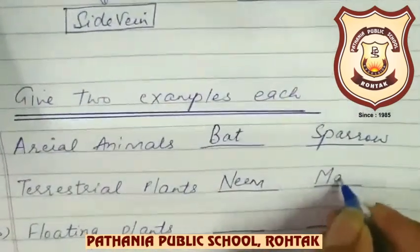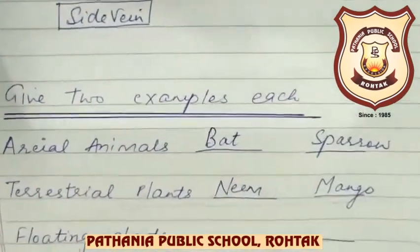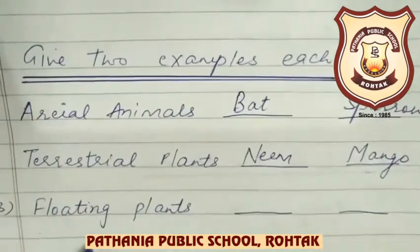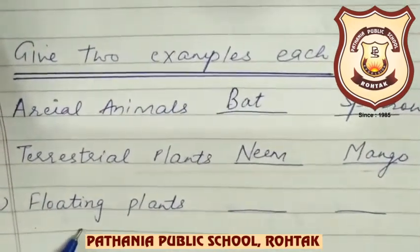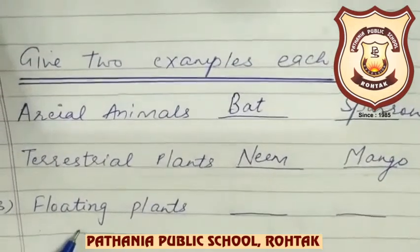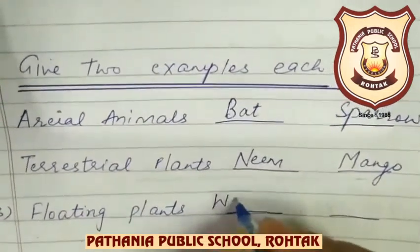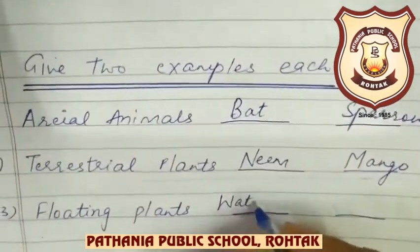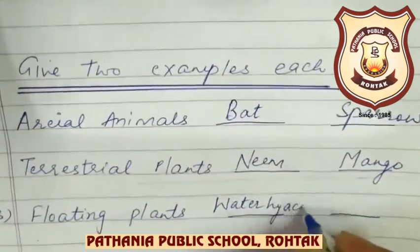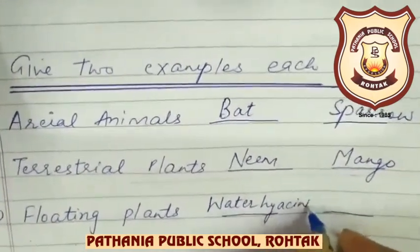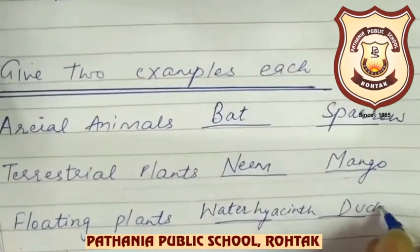Terrestrial plants — those that live on land. You can write anyone: Neem, Mango. Floating plants — you have to write the floating plant that floats on water. That is Water Hyacinth and Duckweed.